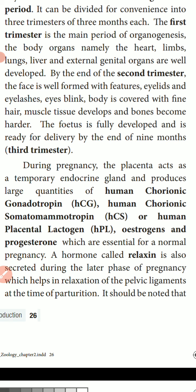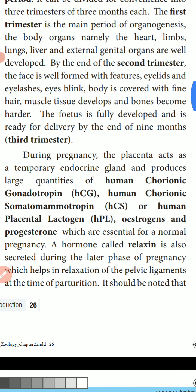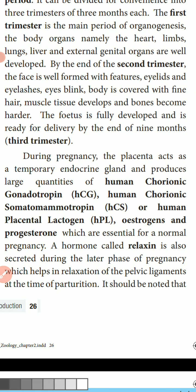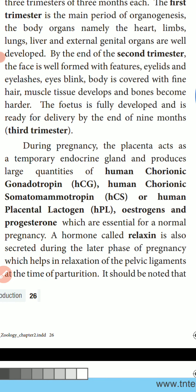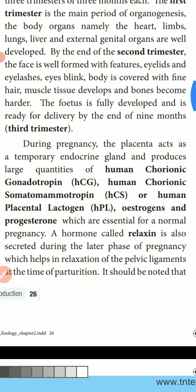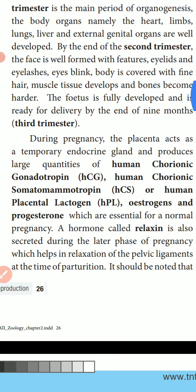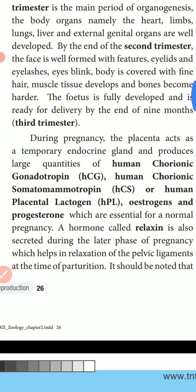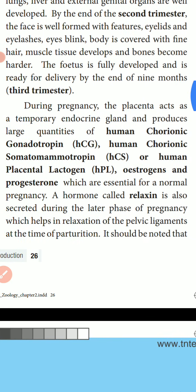In the second trimester, the face is well formed with features, eyelids and eyelashes, eye blinks; the body is covered with fine hair; muscles and tissues develop; and bones become harder. By the end of 9 months — the third trimester — the fetus is fully developed and ready for delivery.